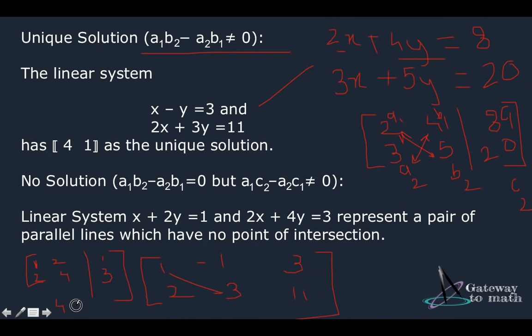a1, b2, 4 minus 4. This is equivalent to 0. It satisfies the first condition. Let's check for the second one. a1, c2, 1 multiplied by 3 minus 2 multiplied by 1. It's not equivalent to 0. This equation is also satisfied. So these two equations do not have any solutions. So they represent a set of parallel lines because they do not intersect anywhere.